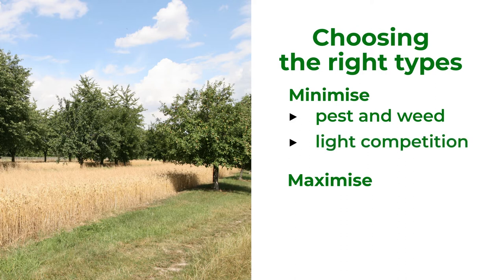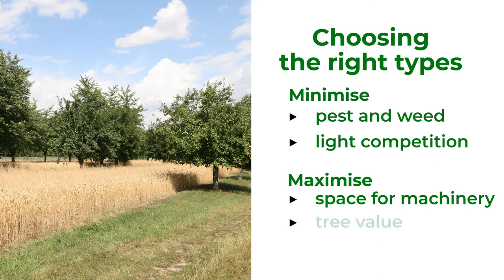Keep light interception high by pruning the trees regularly to minimize light competition. Pruning the trees can also help maximize space for mechanized machinery to operate between the tree rows. To maximize tree value, consider which type of tree is suitable for the specific land and most profitable for later processing. The trees must also be protected.